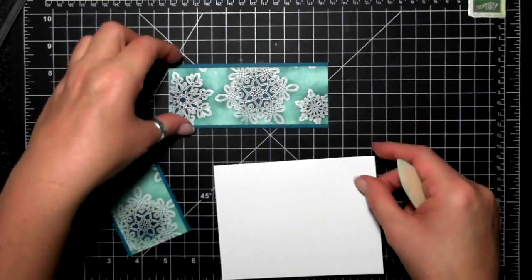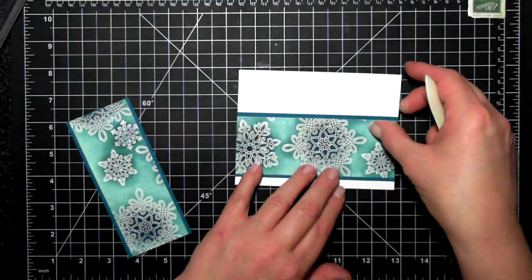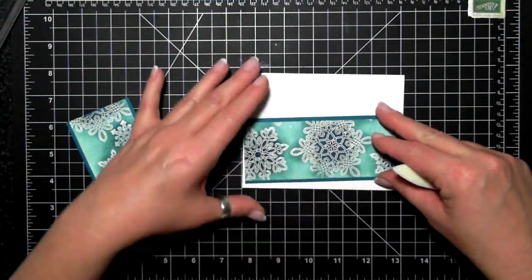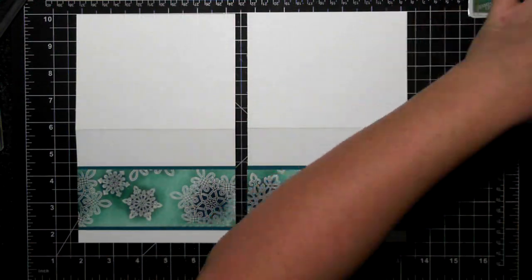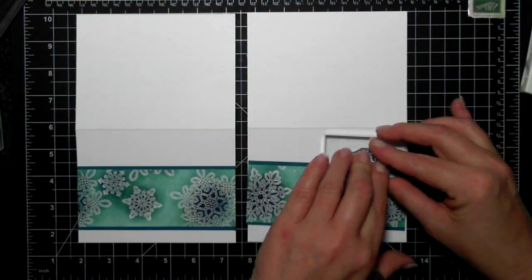So this would be easy to mass produce using a large piece of whisper white and stamping the snowflakes all over it.